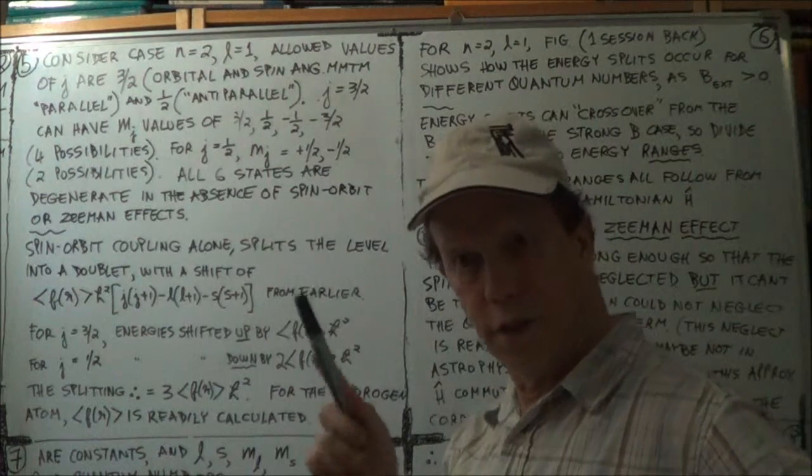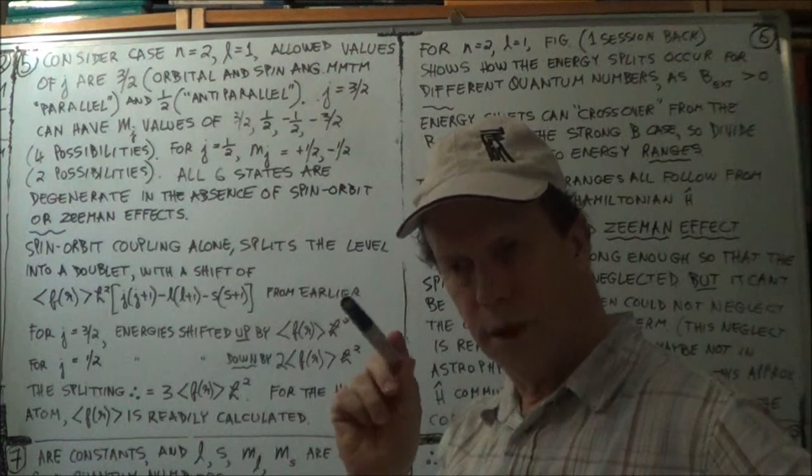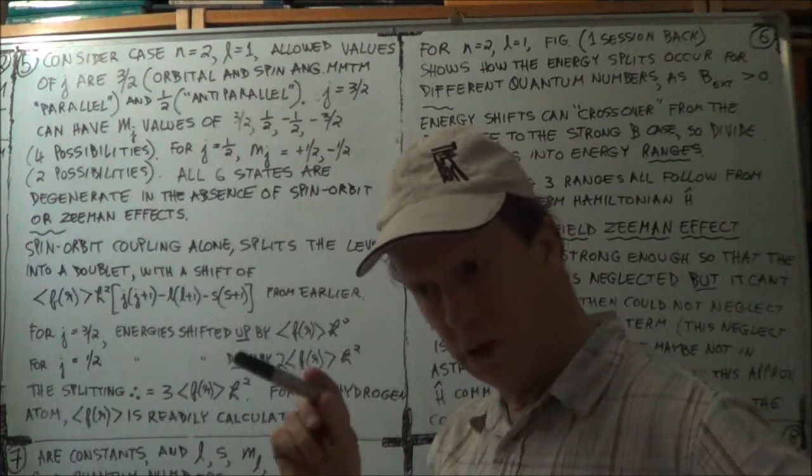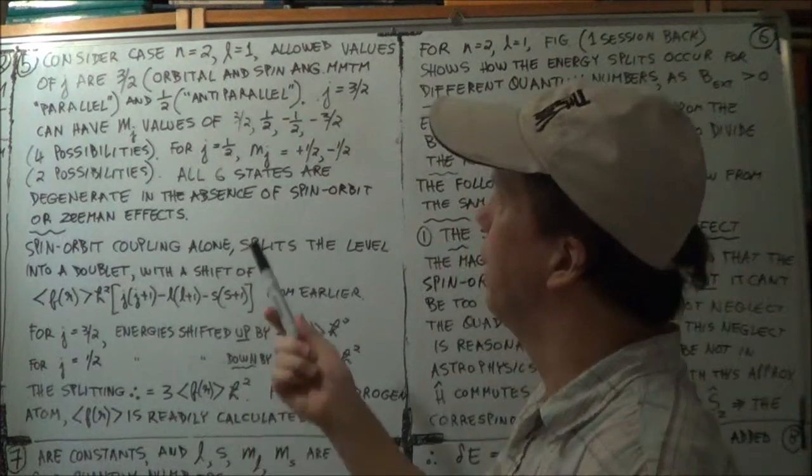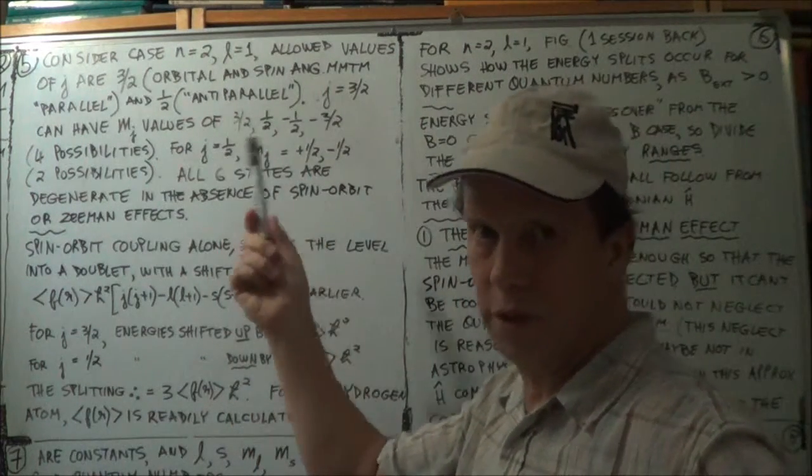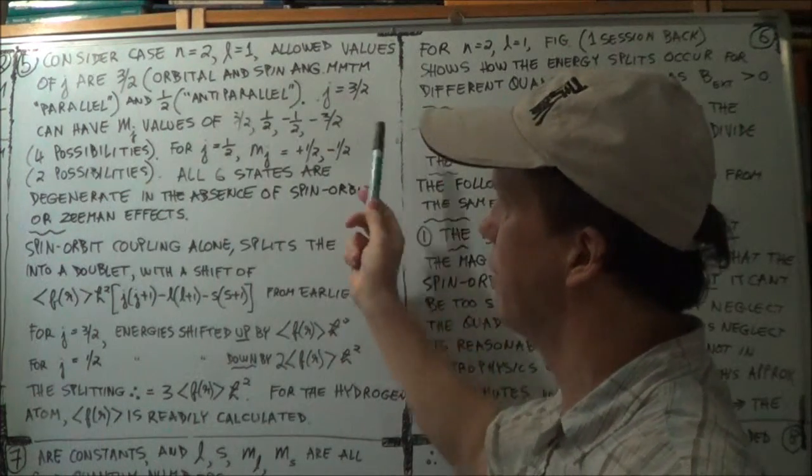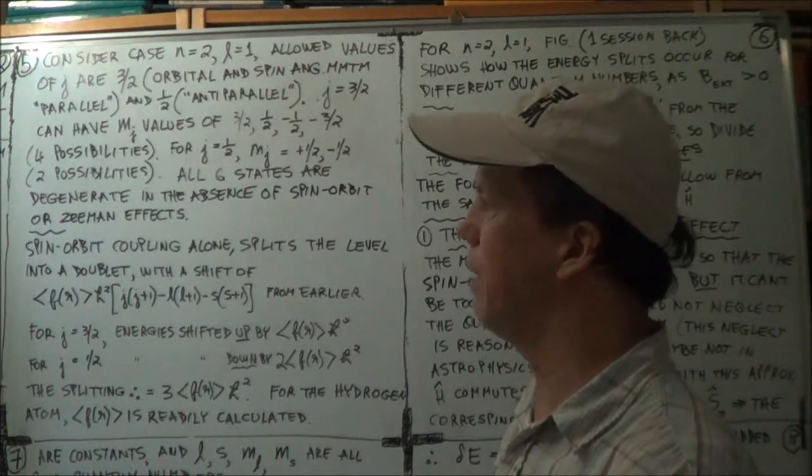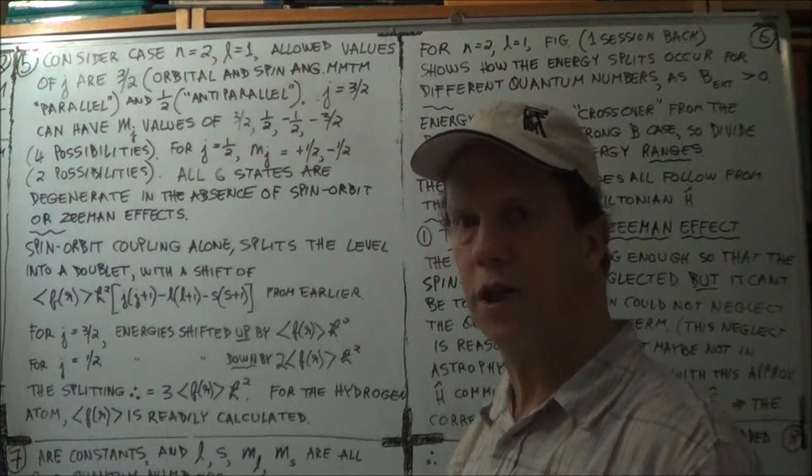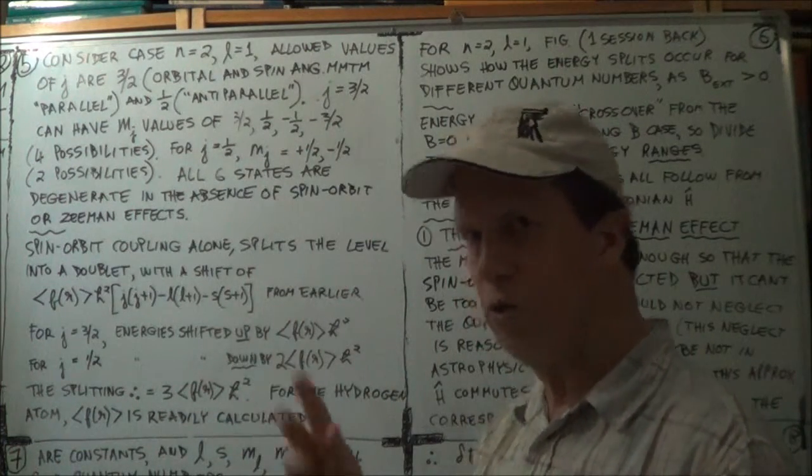The M ranges over the range plus J to minus J in jumps of unit 1. In that case, there's only two possibilities. So the energy, that particular energy spectral line splits two ways, not four ways. So you've got six cases.